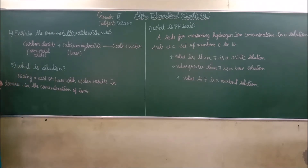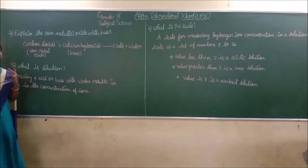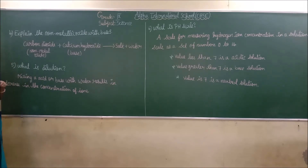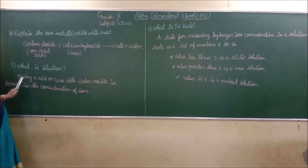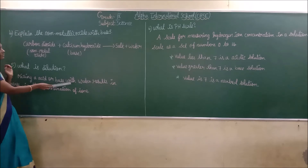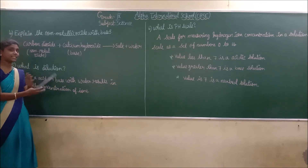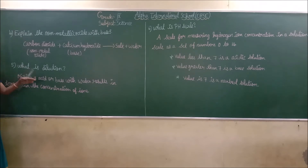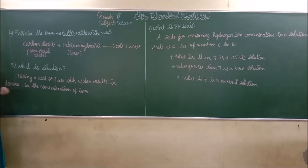What is dilution? To reduce the concentration or power of an acid, we dilute the acid. Mixing an acid or base with water decreases the concentration of ions — the water decreases the power of the acid. This process is called dilution.